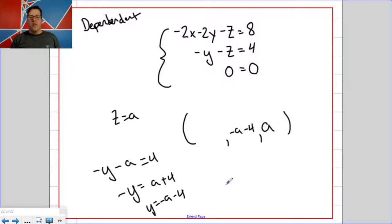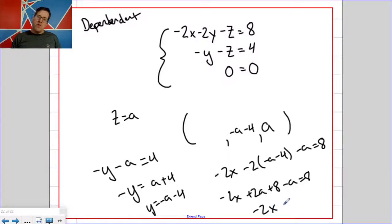And then we plug both of those into the equation above that. So negative 2x minus 2 times negative a minus 4 minus a equals 8. And we're going to solve that for x. So negative 2x plus 2a plus 8 minus a equals 8. Let's see, the 8's cancel out. We get negative 2x plus a equals 0 or x equals a over 2.